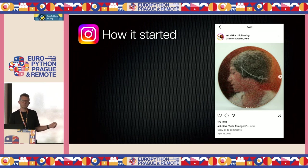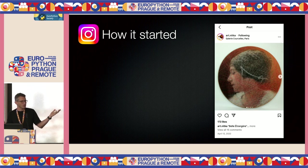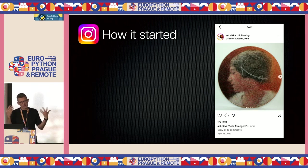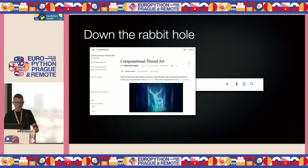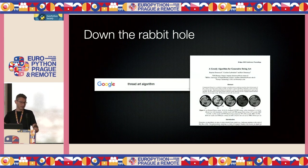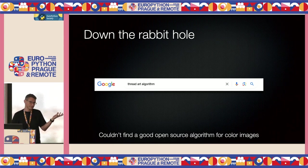How did it start? I was scrolling on Instagram — I'm more of a Twitter guy — and I saw this post about an art piece made out of strings. I'm a geek; I admired the art, but one of the first things I thought about was: how did they get the algorithm to know how to stretch these strings? That sent me down a rabbit hole. I started with a Google search — this is before AI and Perplexity — reading blog posts and even academic papers on how to do this. I found algorithms for black-and-white threads but couldn't find a good open-source algorithm for color images, so I figured let's start playing around.